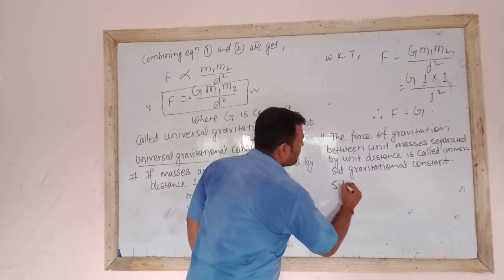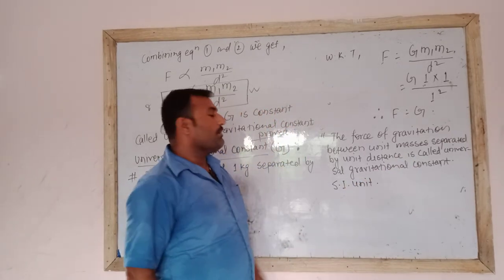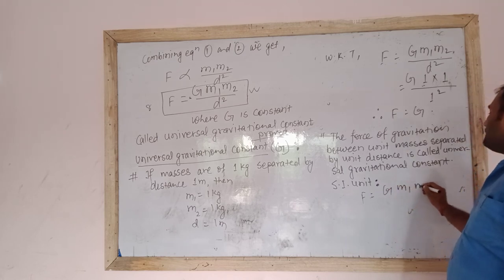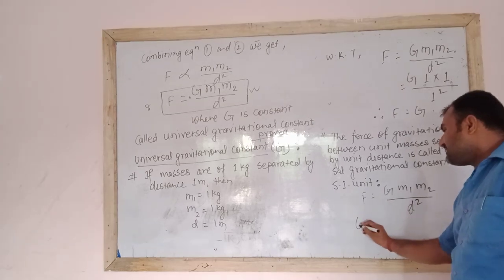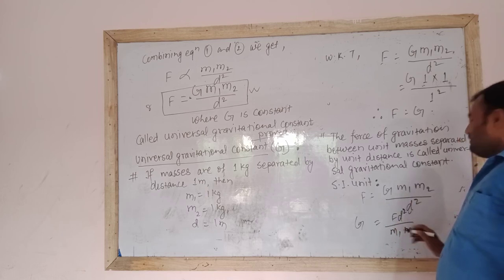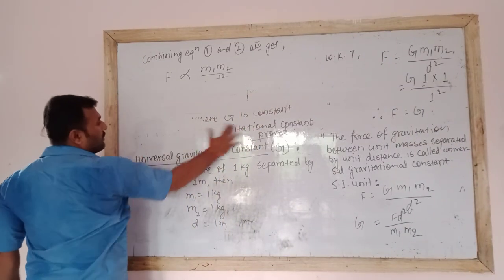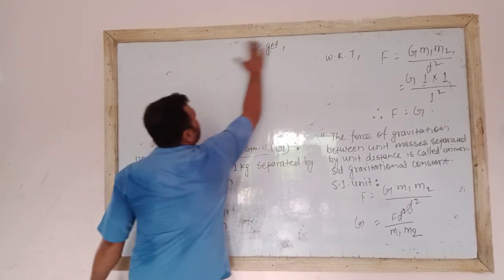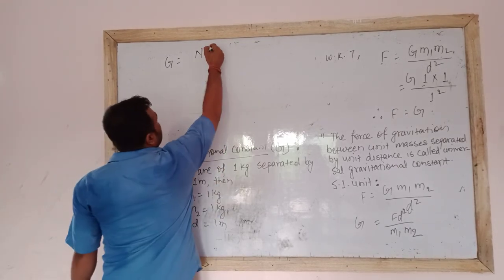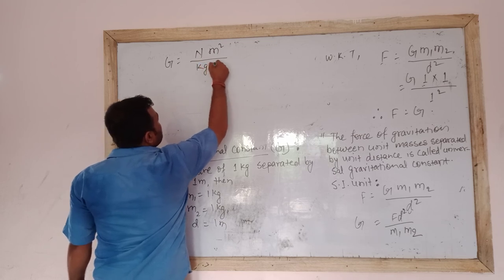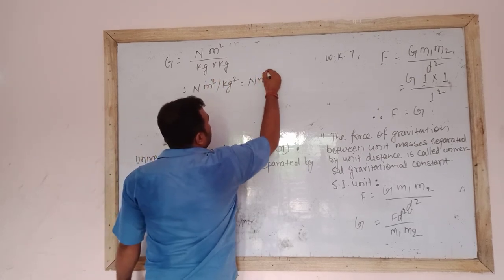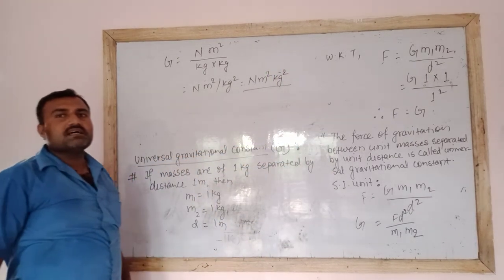Now how do we find the SI unit of Newton's universal gravitational constant? We know that F equals G M1 M2 divided by D squared. Rearranging, G equals F times D squared divided by M1 times M2. Replacing the units of each term: force is measured in Newton, distance squared in meter squared, mass in kg times kg. Therefore, the unit of G equals Newton meter squared per kg squared, which can also be written as Newton meter squared per kg to the power of negative 2. This is the SI unit of the universal gravitational constant.